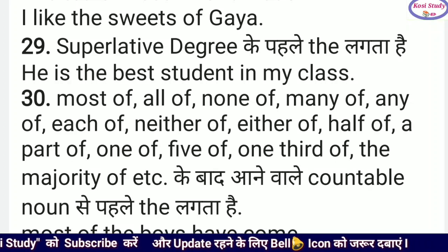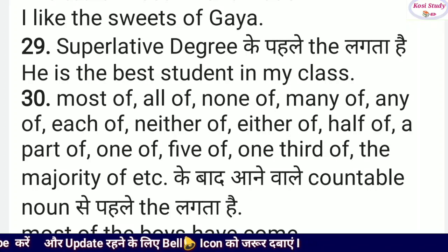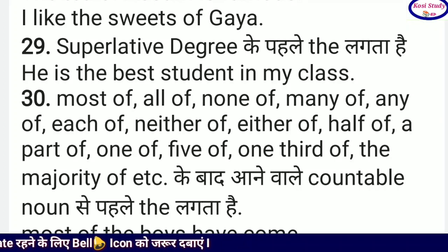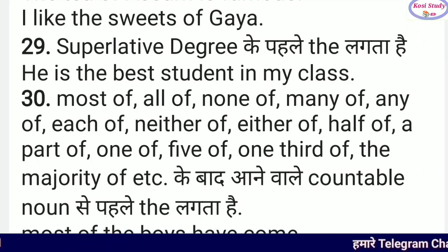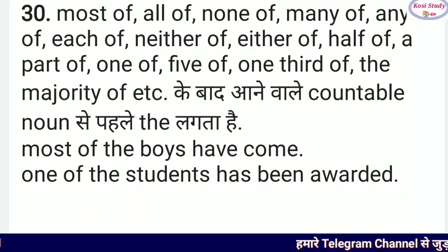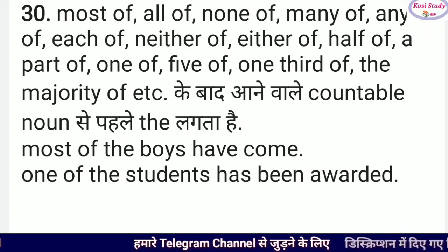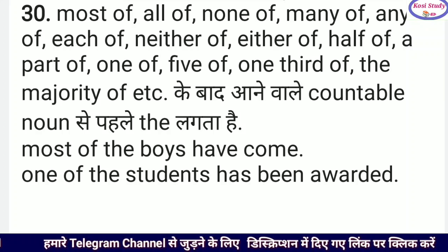Last use है: Most of, all of, none of, any of, each of, neither of, either of, half of, apart of, one of, five of, one third of, the majority of, etc. — के बाद आने वाले countable noun से पहले 'the' का प्रयोग किया जाता है। For example: 'Most of the wise have come', 'One of the students has been awarded' — यानि एक छात्र को award दिया गया, और बहुत सारे छात्र आ चुके हैं।